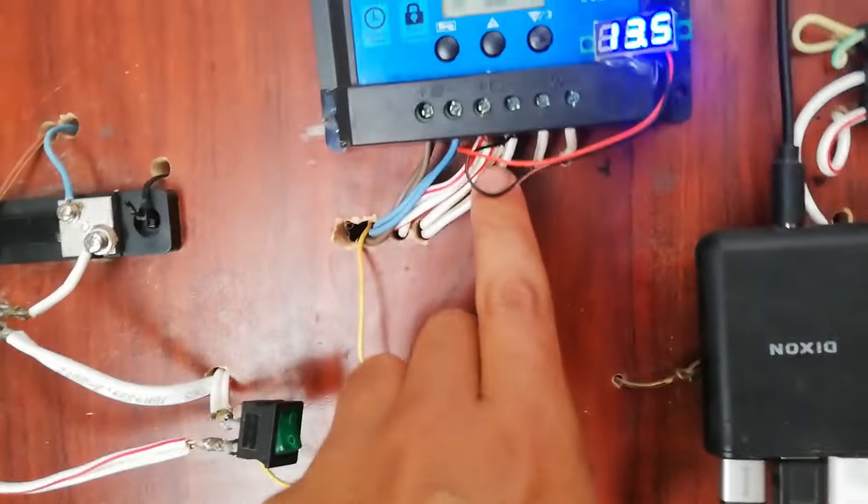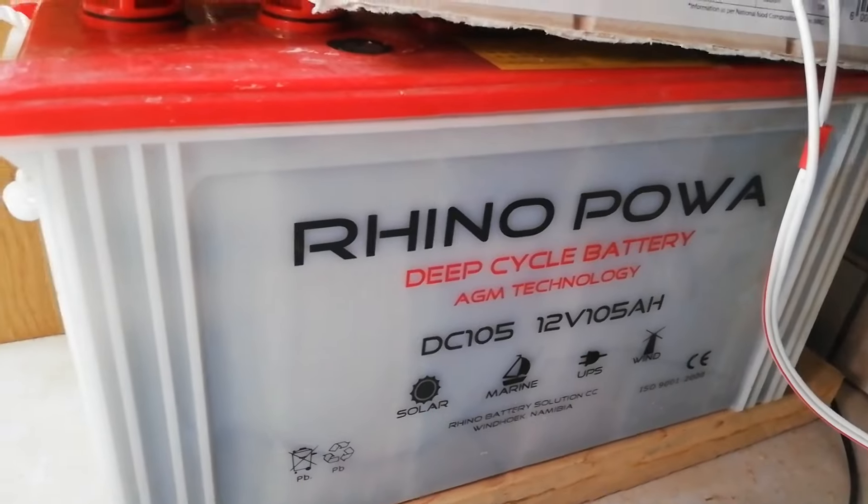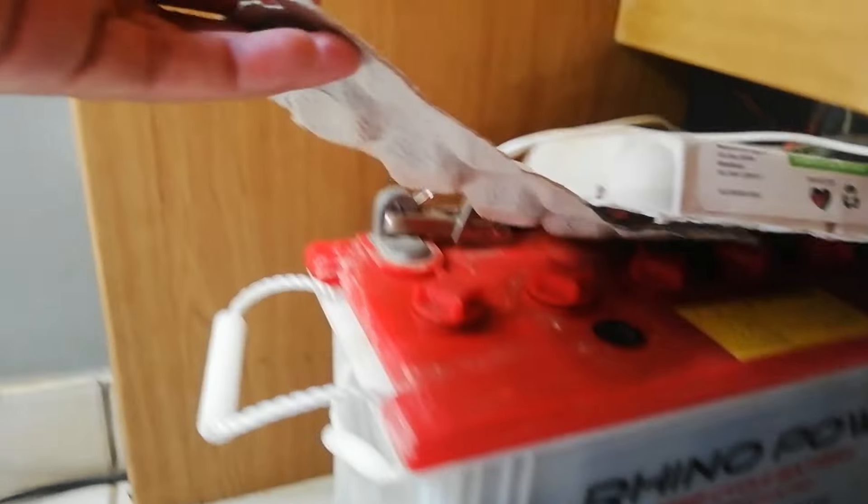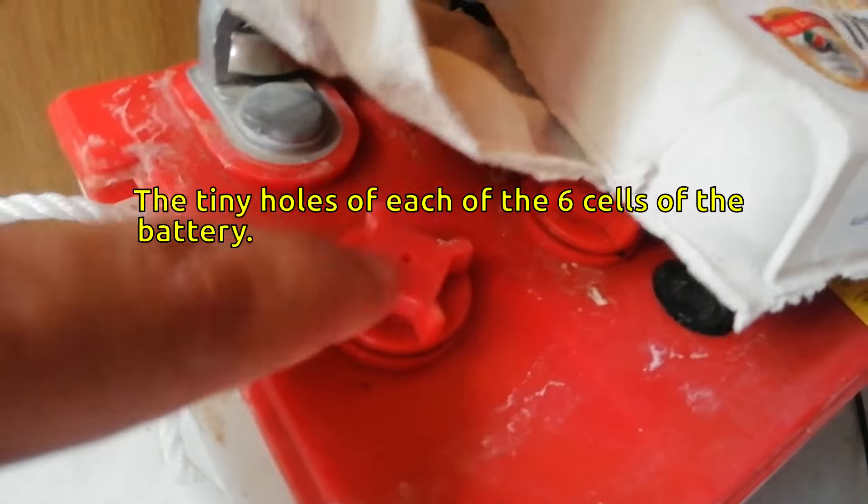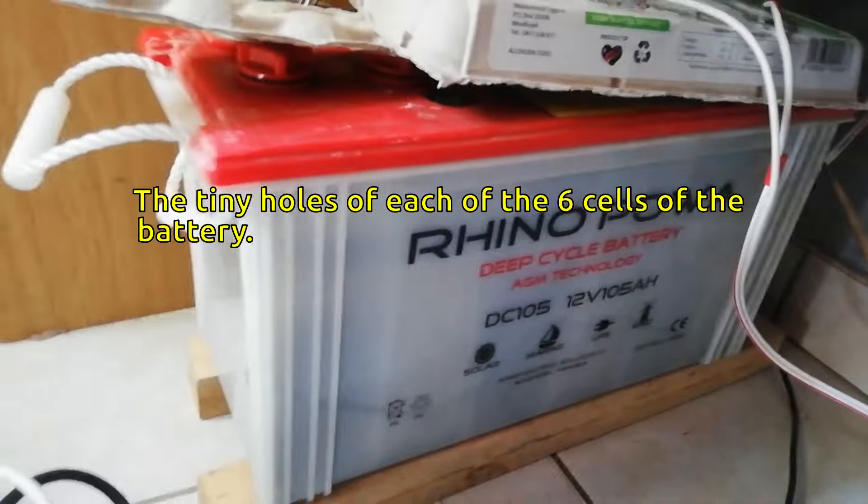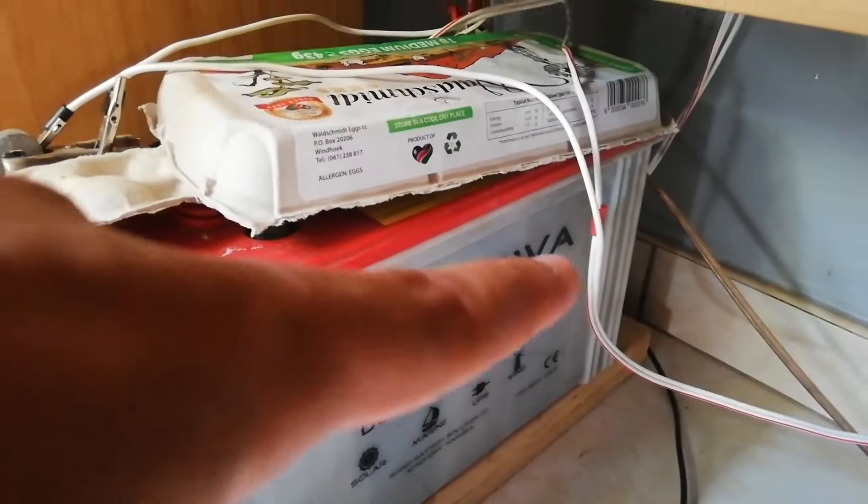You see that at the back it goes down to this battery right there. Now I have these air cartons just to ensure that no dust gets into the tiny hole over there. It's a flooded lead acid deep cycle battery from Rhino Power. See that red cable there.